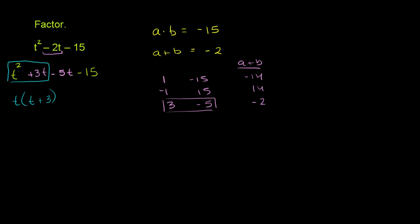Now let's look at the second two terms. What's a common factor? Well, they're both divisible by negative 5, so let's factor out a negative 5. Negative 5t divided by negative 5, you're just going to have a t there. And then negative 15 — if you factor out a negative 5, you divide negative 15 by negative 5, you're going to have a positive 3.